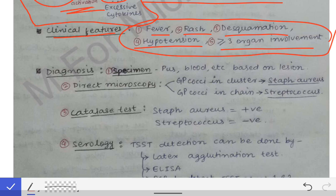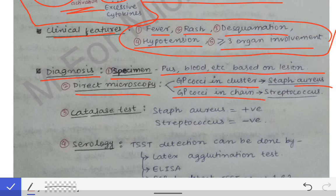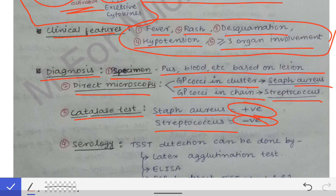For diagnosis, we collect the specimen based on the lesion. We perform direct microscopy: if gram-positive cocci in clusters are seen, it indicates Staph aureus; if gram-positive cocci in chains, it indicates Streptococcus. Then we perform the catalase test — if positive, it is Staph aureus; if negative, it is Streptococcus.